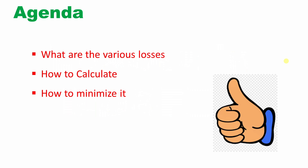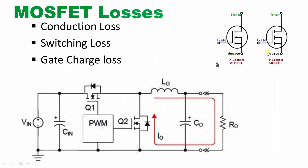The MOSFET has three terminals: drain, source, and gate. We have to apply the gate voltage from gate to source terminal so that current will flow from drain to source. The losses happening in a MOSFET can be categorized into three sections: conduction losses, switching losses, and gate charge losses.